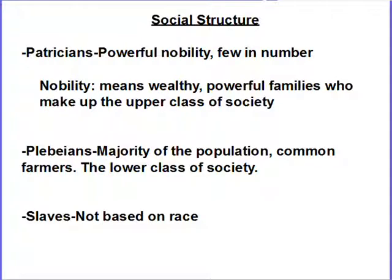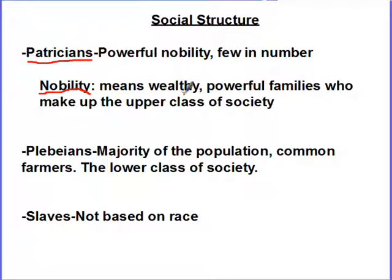The social structure in Rome: patricians are the powerful nobility — the wealthy individuals that control society. The word nobility means wealthy, powerful families who make up the upper class of society. These patricians are usually big landowners, wealthy traders, or wealthy government officials. These guys are going to be few in number, and they're going to be powerful.